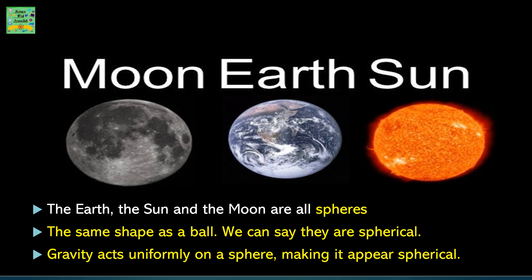The Earth, the Sun, and the Moon are all spheres. The same shape as a ball. We can say they are spherical. Gravity acts uniformly on a sphere, making it appear spherical.